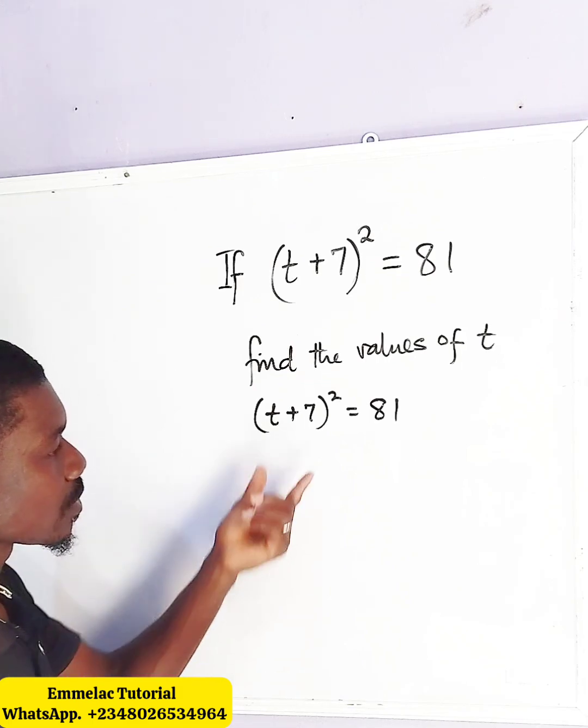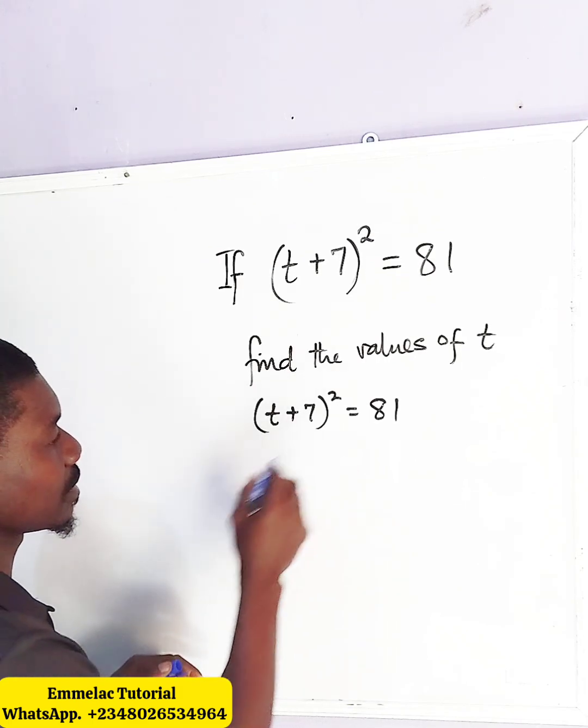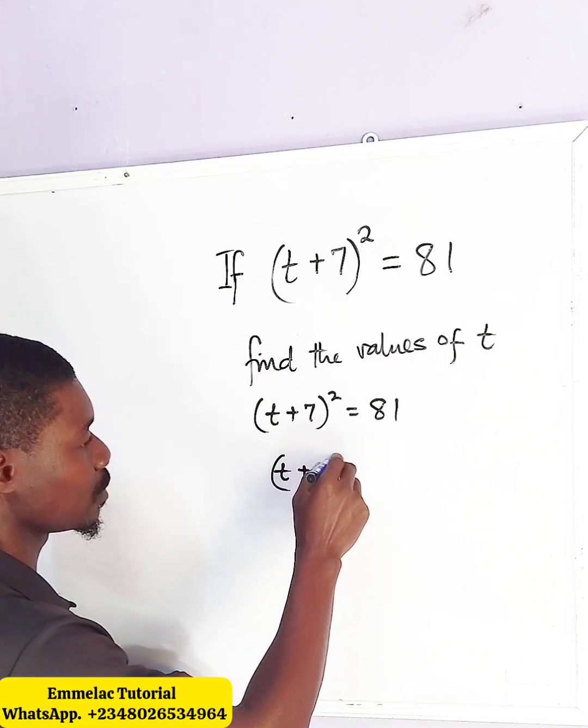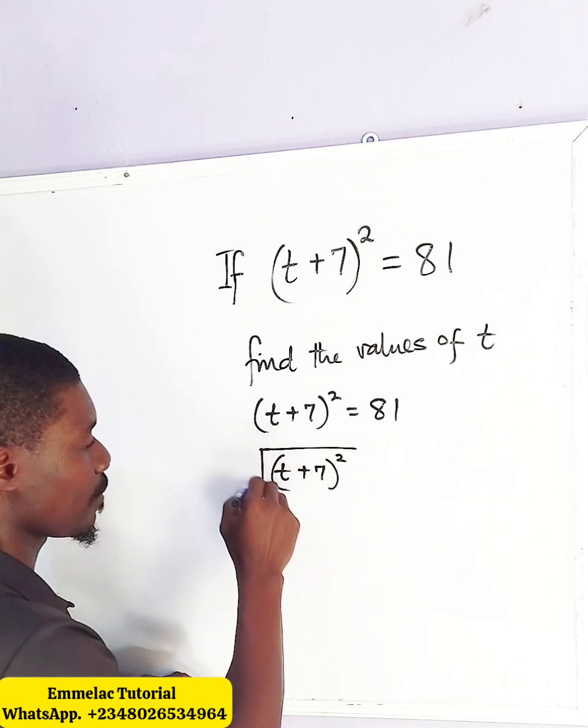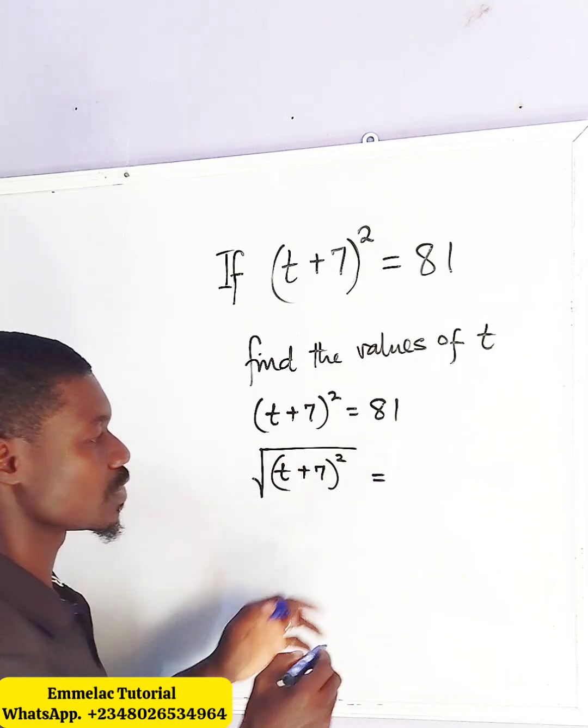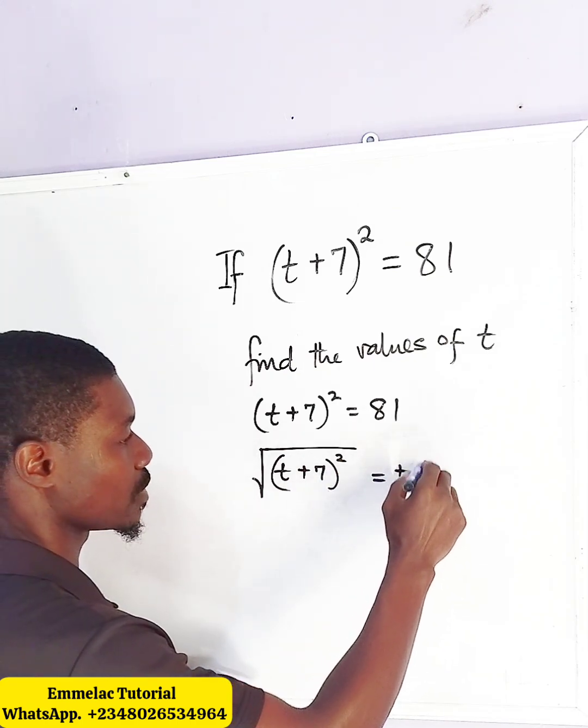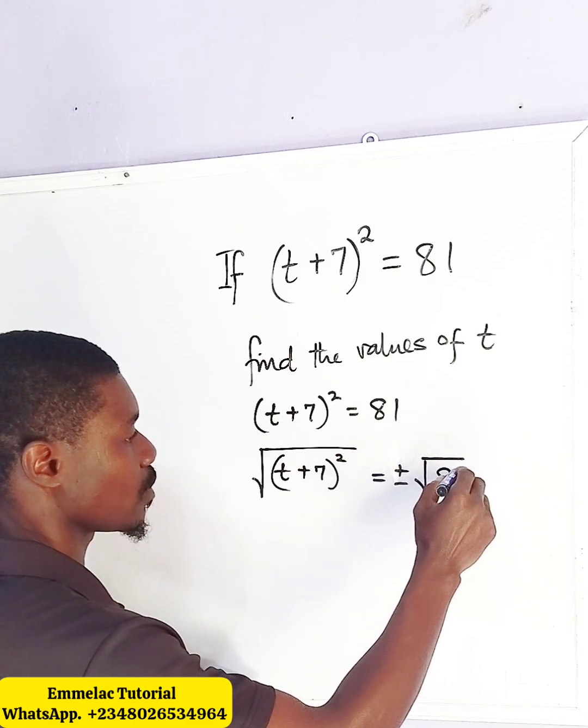Now we can come here and see that (t+7)², all raised to the power of 2, we square root both sides, and the reason why we square root both sides is to undo this square here, so here we have plus or minus the square root of 81.